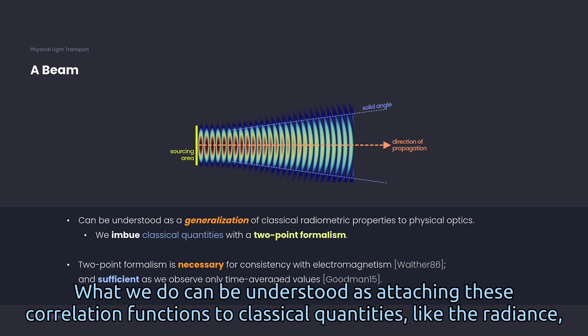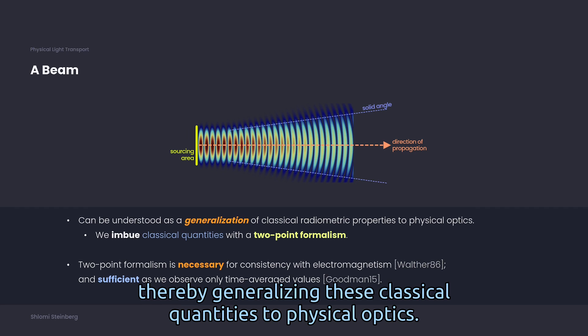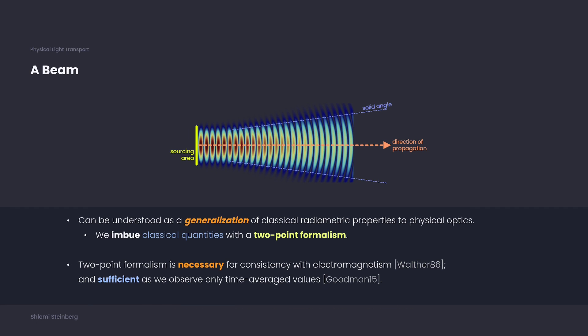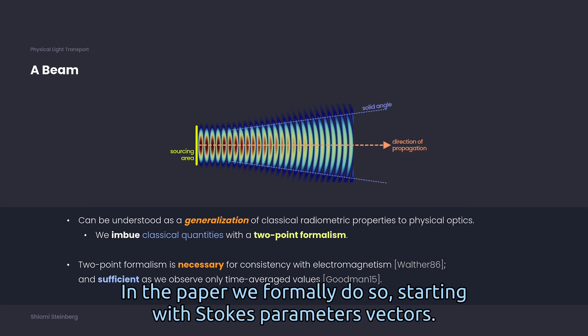What we do can be understood as attaching these correlation functions to classical quantities, like the radiance, thereby generalizing these classical quantities to physical optics. In the paper, we formally do so, starting with Stokes' parameters vectors.